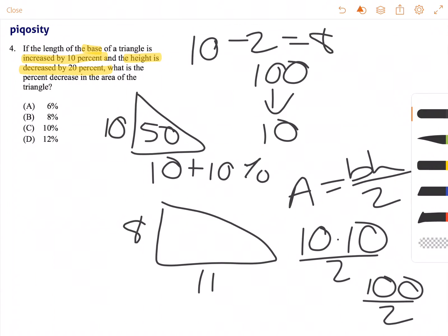For this new triangle, 8 times 11 divided by 2 is 88 divided by 2, or 44. So the original triangle's area is 50, and the new triangle's area is 44.